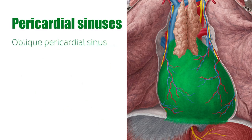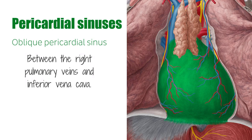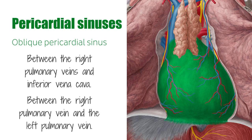The oblique pericardial sinus exists in the posterior part of the pericardium, and is bordered laterally by the pulmonary veins which enter the heart, and inferiorly by the inferior vena cava which is also returning to the heart. More specifically, it lies between the right pulmonary veins and the inferior vena cava, and between the right pulmonary vein and the left pulmonary vein.